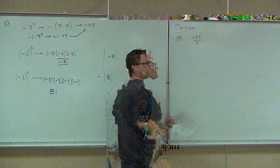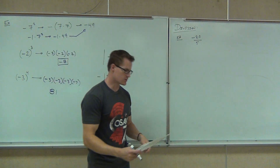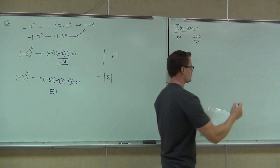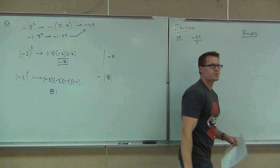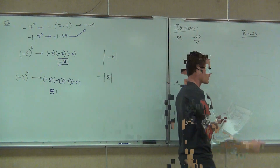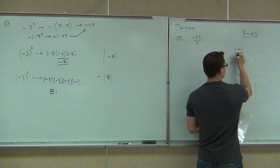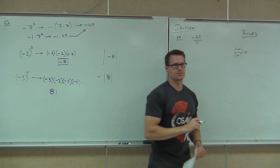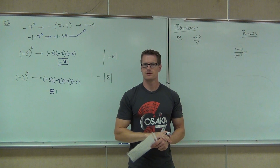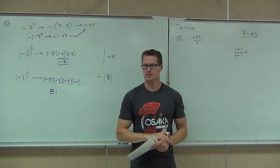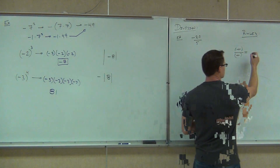Here's how we're going to see most of our problems with division — they'll look like fractions, and fractions just mean division. So if we are dividing a positive by a positive, what's a positive divided by a positive? That's like 24 divided by 6 — positive divided by positive gives a positive.